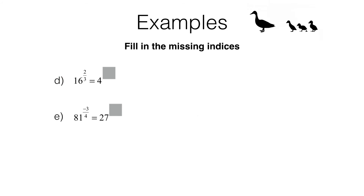Moving on, here's question d. Pause the video and try this one for yourself. This time you needed to spot that 16 is 4 squared. So we've got 16 to the power of 2 thirds equals 4 squared all raised to the power of 2 thirds. Simplifying this power we get 4 to the power of 2 times 2 thirds, which is 4 to the power of 4 thirds. So the missing index there is 4 thirds.